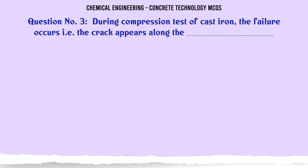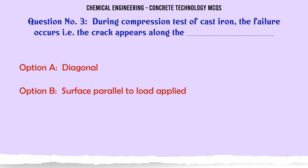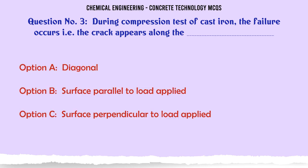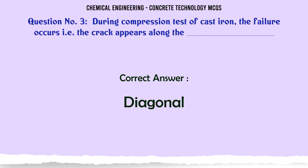During compression test of cast iron, the failure occurs — i.e., the crack appears — along the: A. diagonal. B. surface parallel to load applied. C. surface perpendicular to load applied. D. lateral. The correct answer is diagonal.